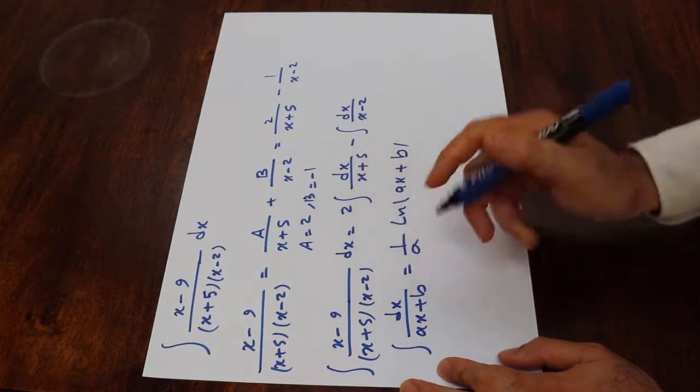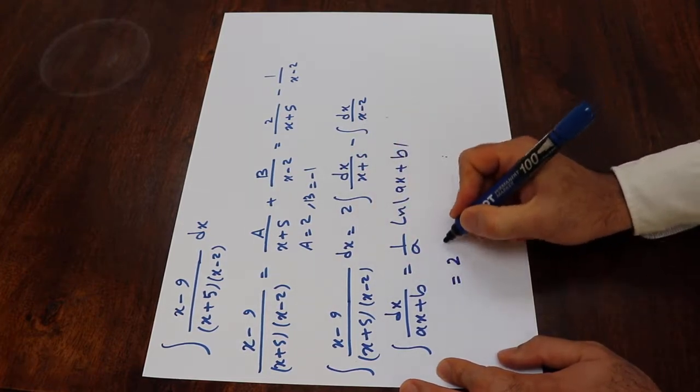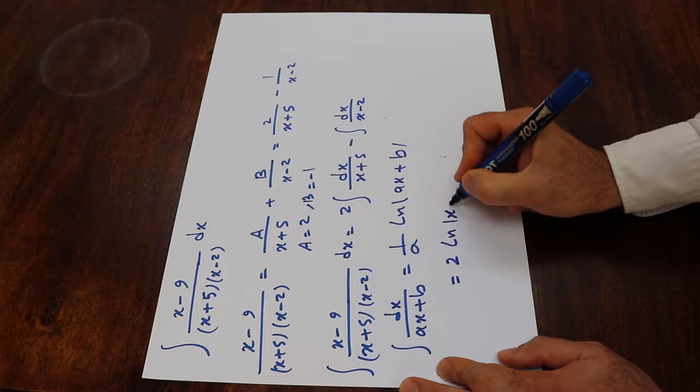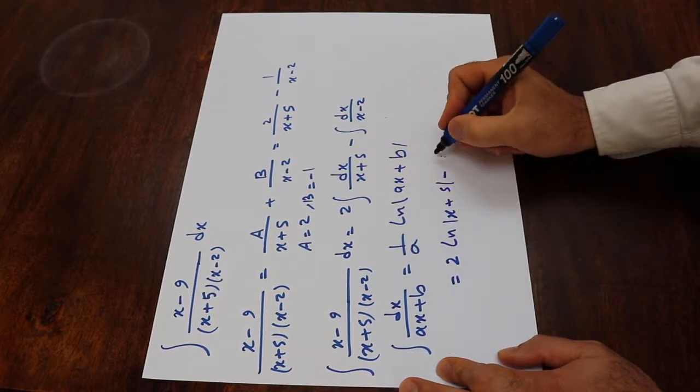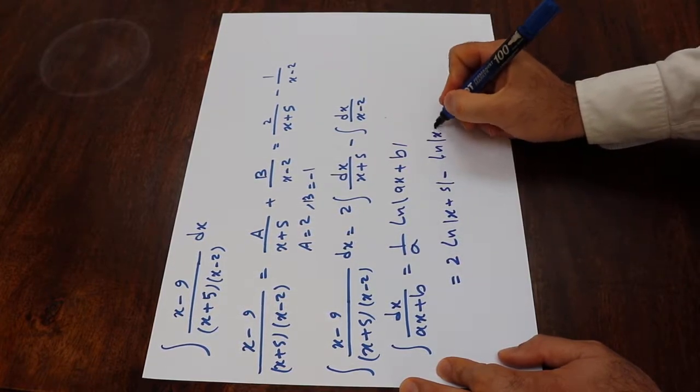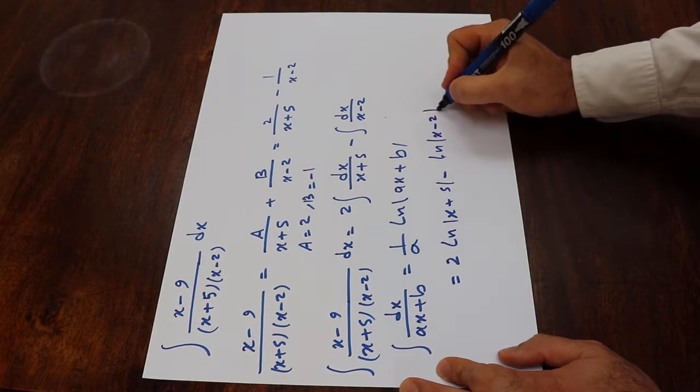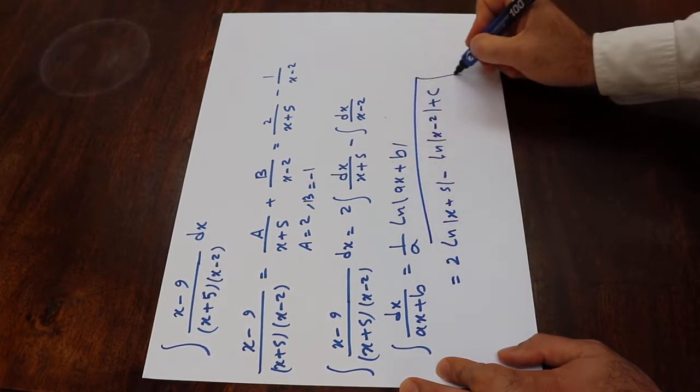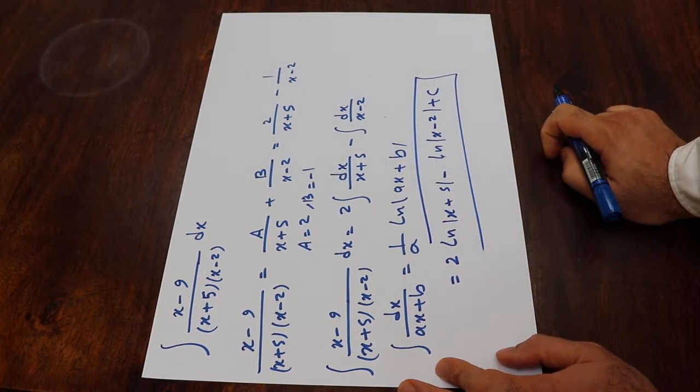So using this formula, this integral will be equal to 2 ln x plus 5 minus ln x minus 2 plus c, which is the constant of integration. And that is the solution to our integral.